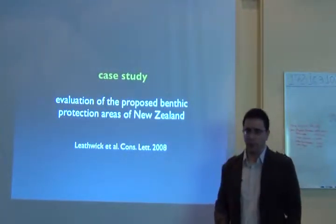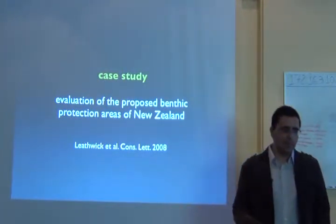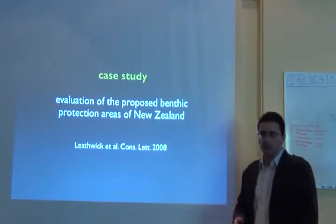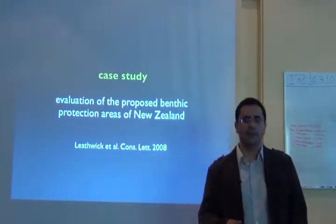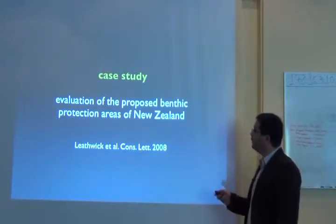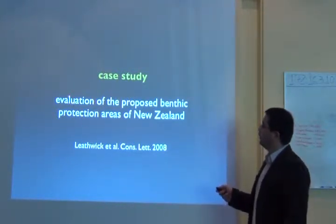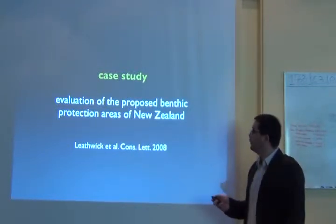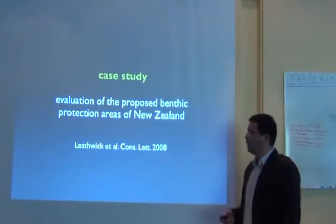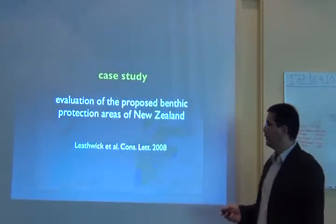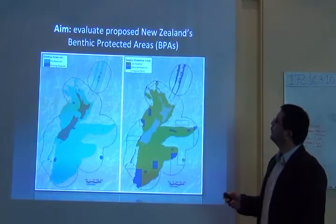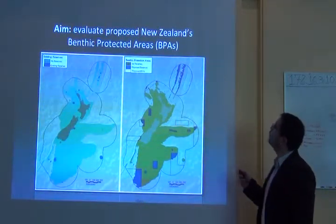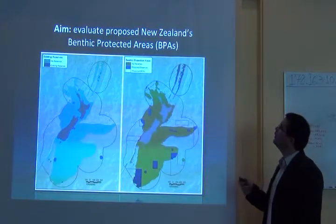Zonation has been used in many studies doing different things. I picked up this case study — a case study on the evaluation of the proposed Bantic proportion and protected areas in New Zealand, a paper published by John Leithwick in Conservation Letters in 2008. The aim of this planning was to evaluate New Zealand's proposed Bantic protected areas.